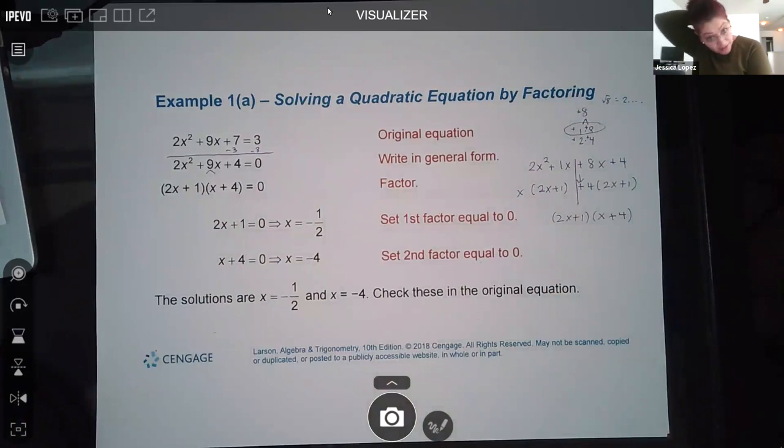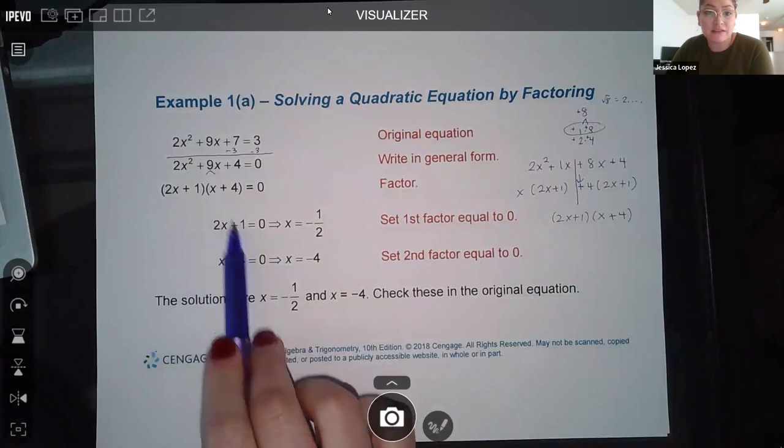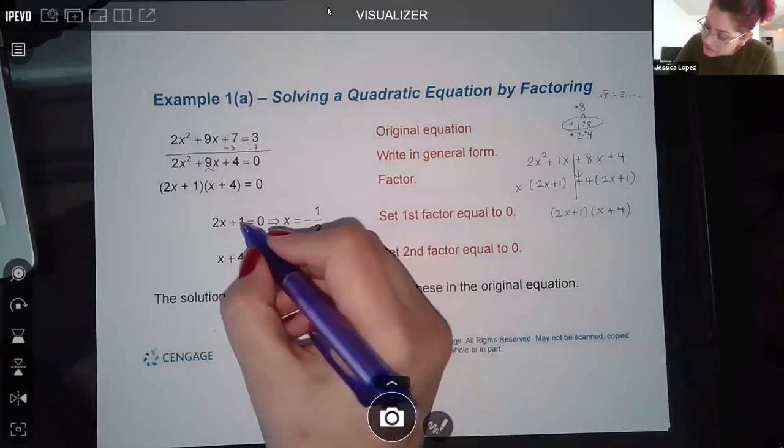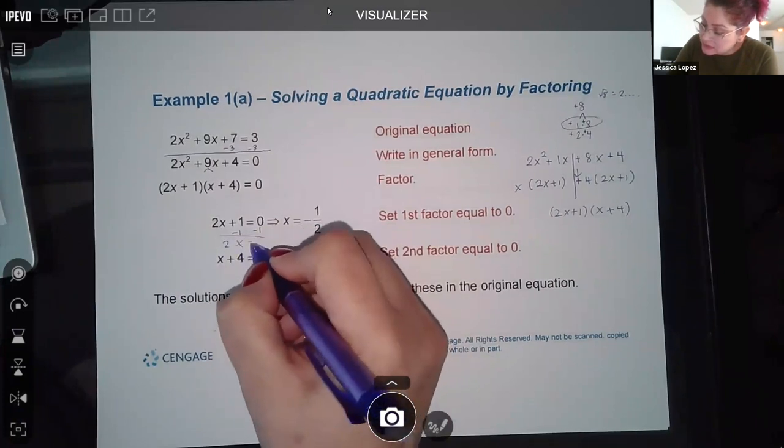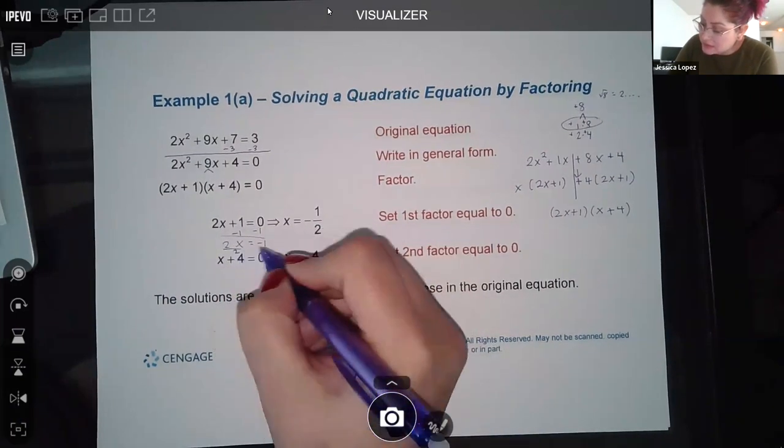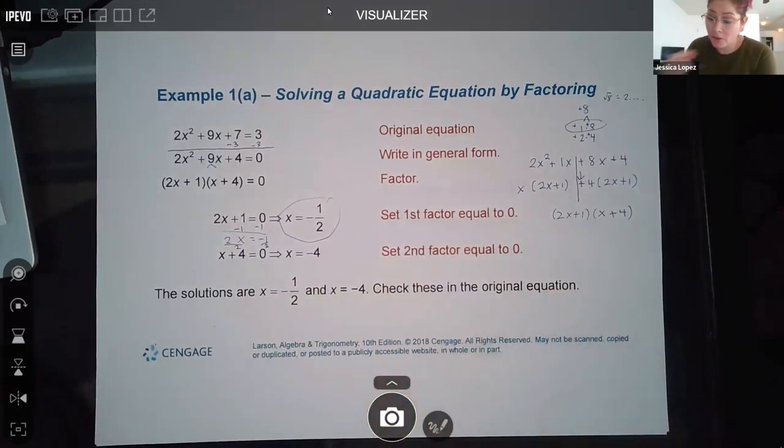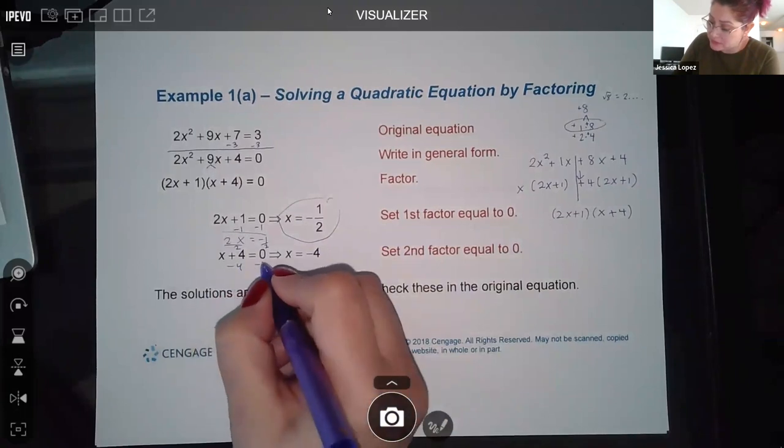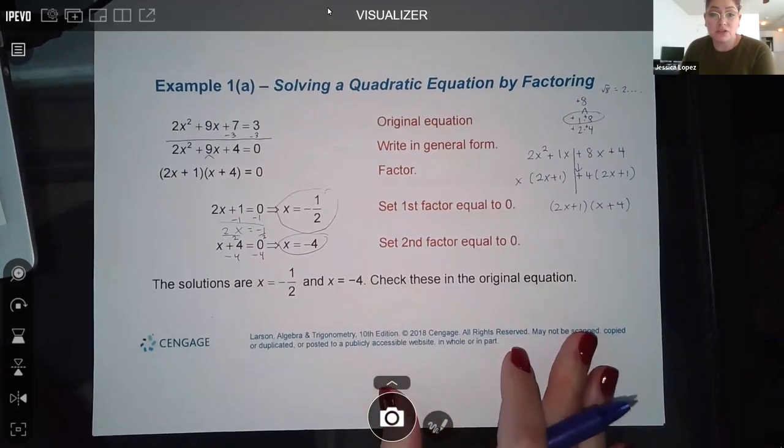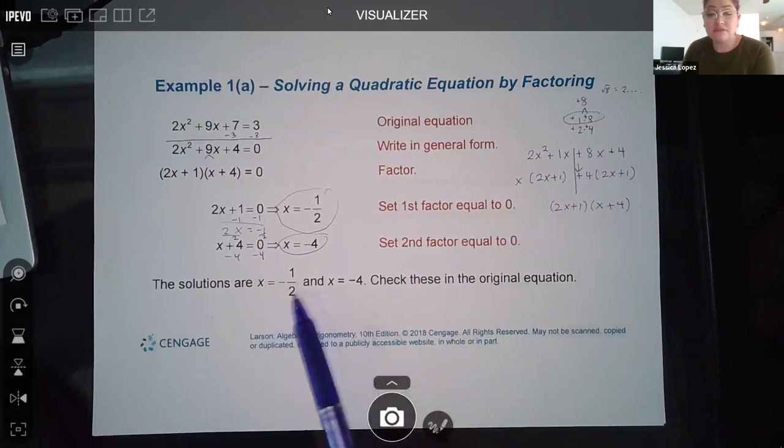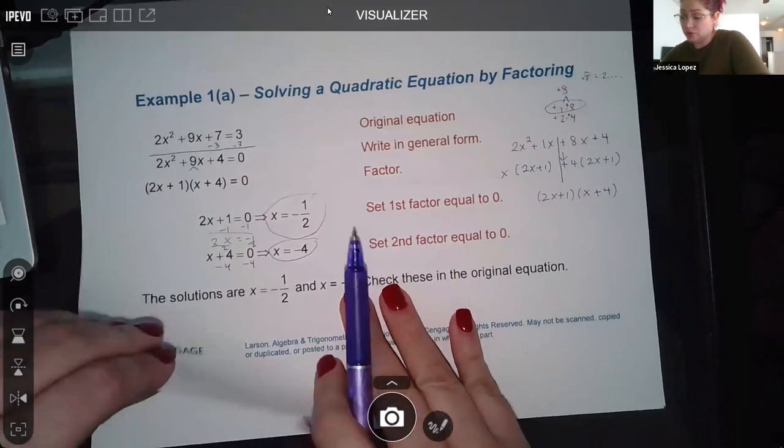So now that we have that, then it's just a matter of setting this factor equal to zero and then setting this factor equal to zero. And if I do set this, I have the minus 1 on both sides, getting 2x equal to negative 1. And then I divide by 2 on both sides, and I get x equal to negative 1 half. Over here, I'm going to minus 4 on both sides, and so I do get x equal to negative 4. So what that means is that both of these values are solutions, and they do say to check them in the original equation.